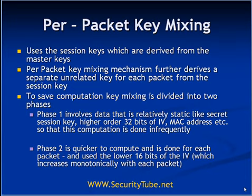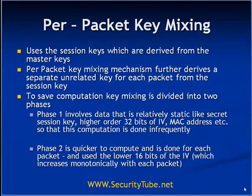How exactly these keys are derived has been explained in more detail in the TKIP sequence counter video. In this video I will briefly explain how encryption is taking place. To save computation, key mixing is divided into two parts: the first part is not required very often, and the second part is done for every packet.